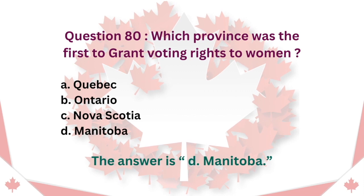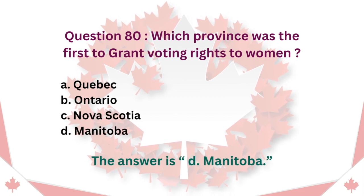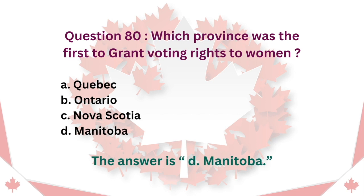Question 80: Which province was the first to grant voting rights to women? A. Quebec. B. Ontario. C. Nova Scotia. D. Manitoba. The answer is D. Manitoba.